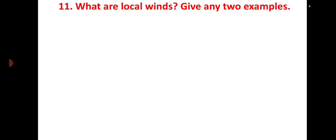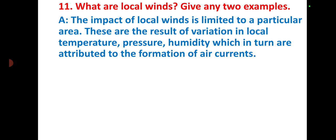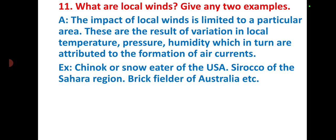What are local winds? Give any two examples. The impact of local winds is limited to a particular area. These are the result of variation in local temperature, pressure, humidity which in turn are attributed to formation of air currents. Examples: Chinook or snow eater of the US, Sirocco of the Sahara region, Brick Fielder of Australia, etc.